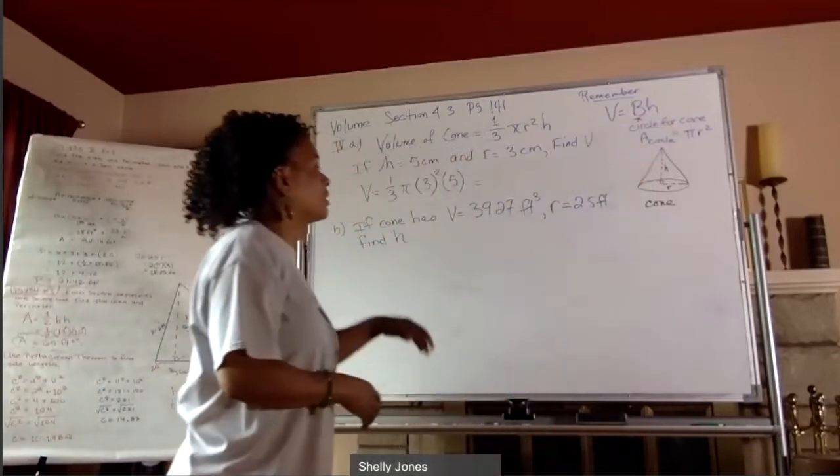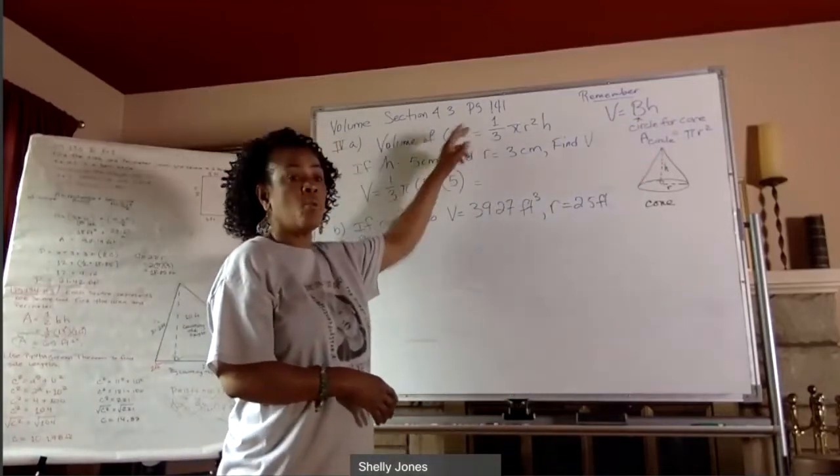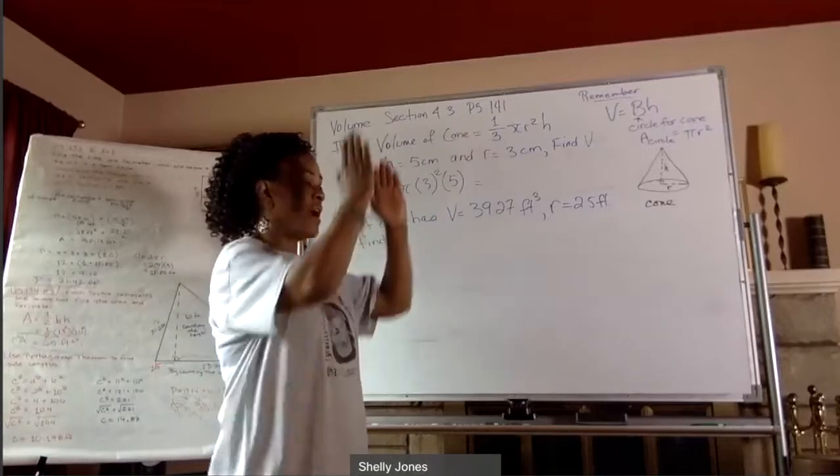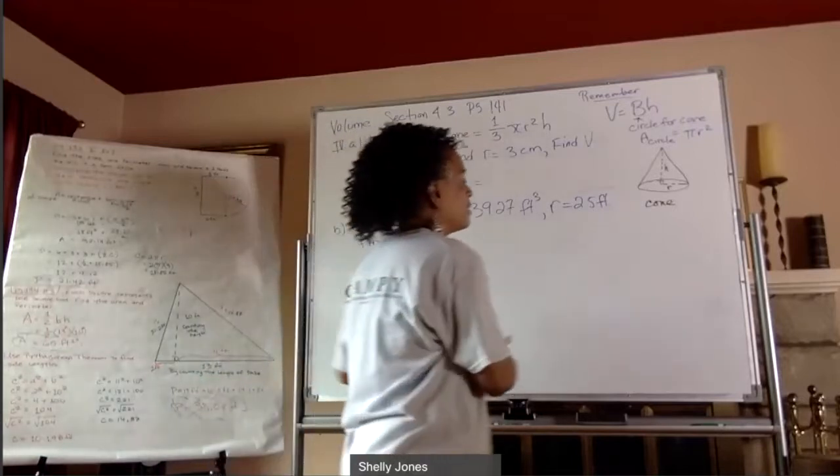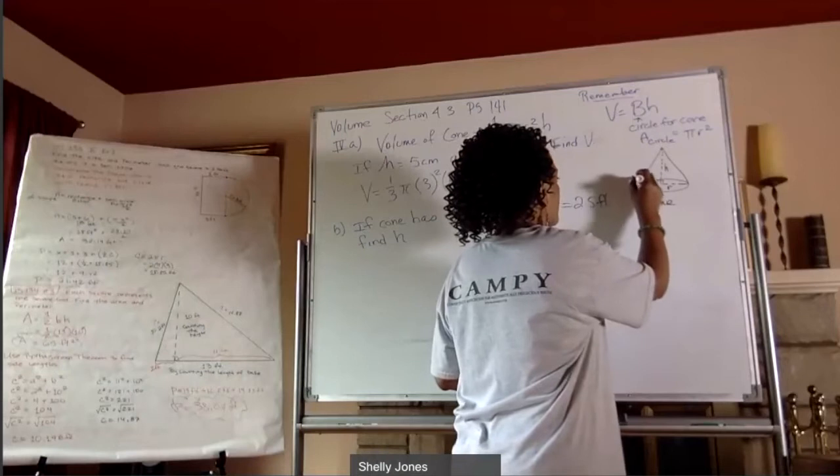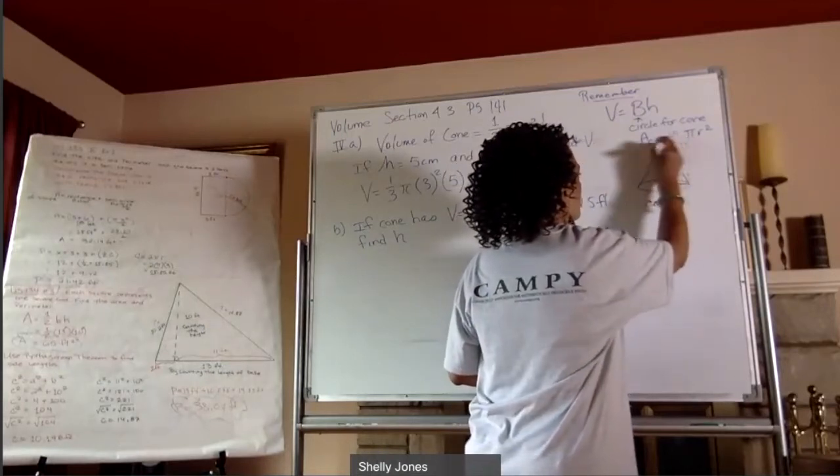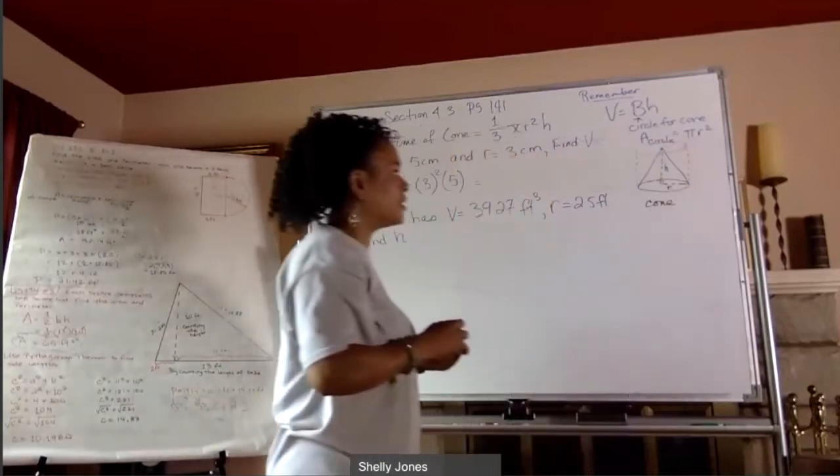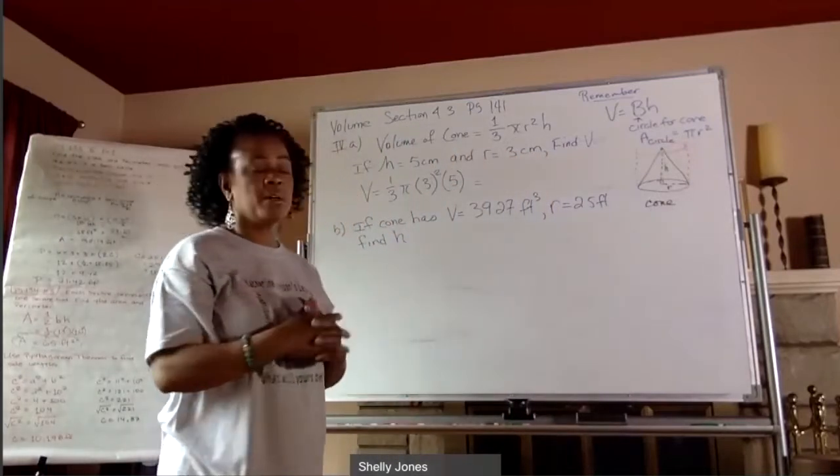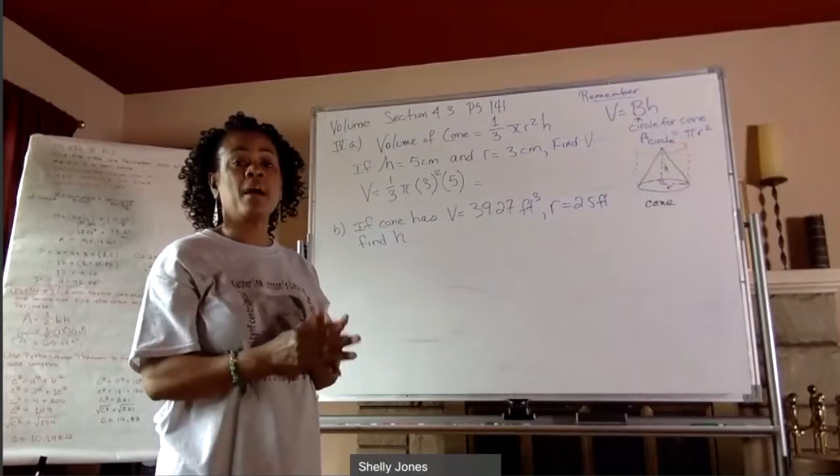But for a cone in particular, we need that to be one third of that because we don't have, like when we have the cylinder coming straight up like this. When we had the cylinder, then we would have the volume of the area of the base times height.